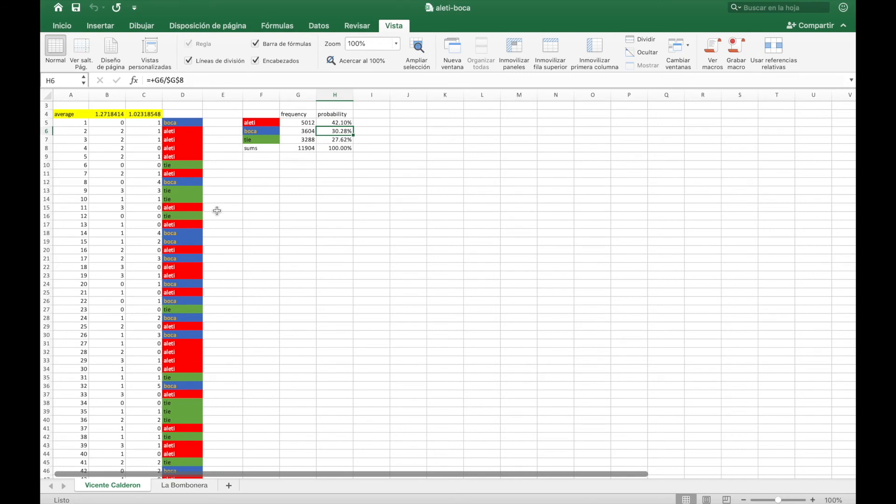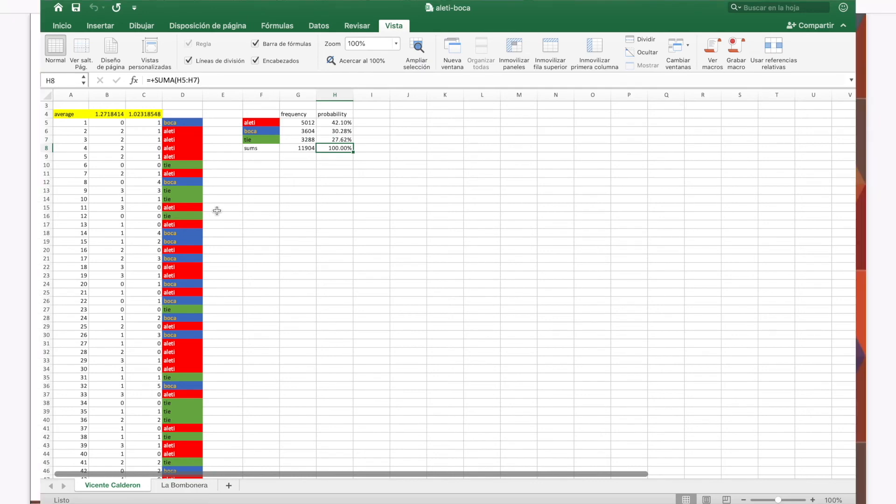We can see that Atleti won 42% of the times, whereas Boca won 30% of the times, and the rest corresponded to ties between the two teams. We can take the exact same assumptions but in the mirror, that is, for a match played at La Bombonera in Buenos Aires.